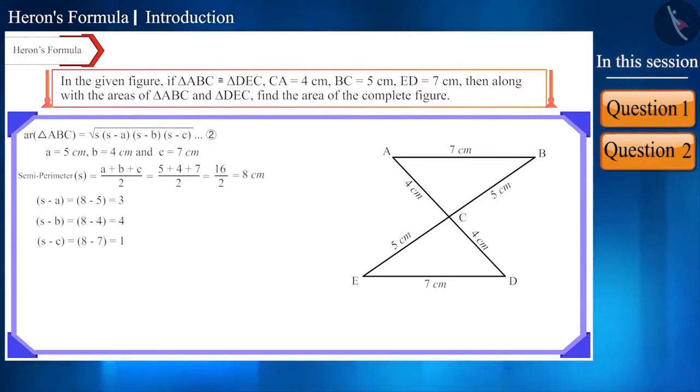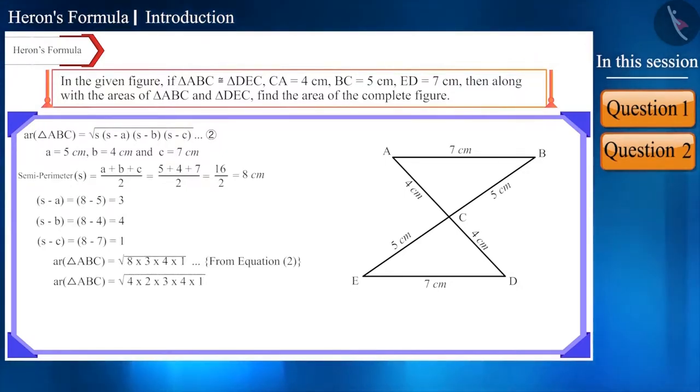Now, let's put these values in Heron's formula. According to Heron's formula, upon simplification, we get the area of triangle ABC as 4√6 cm². Friends, can you now find the area of triangle DEC? Will we again use Heron's formula? No. We know that triangle ABC and triangle DEC are congruent triangles and the areas of congruent triangles are equal.